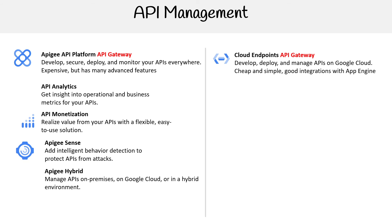There's also Apigee hybrid, which lets you manage APIs on-premise, on Google Cloud, or in a hybrid environment — so you can use your APIs outside of Google Cloud. And Cloud Healthcare API helps secure APIs that power actionable healthcare insights, which I think is on the Apigee side.